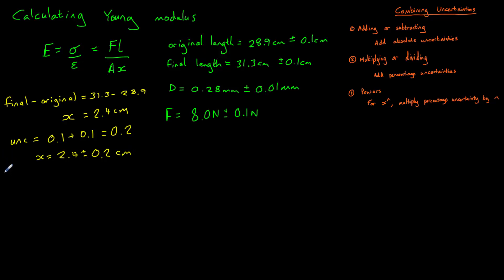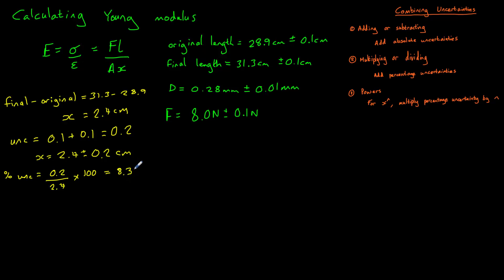We should also work out the percentage uncertainty in the extension. The percentage uncertainty equals the absolute uncertainty (0.2) divided by the value (2.4), multiplied by 100, giving a percentage uncertainty of 8.3%.